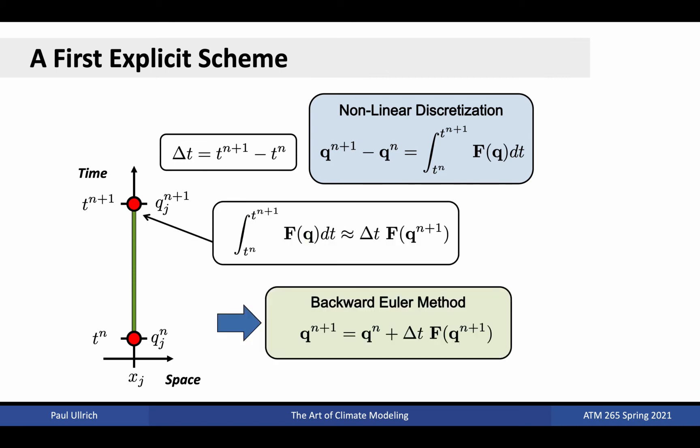But what if we use the final state instead of the initial state to approximate the integral term? In that case, the right-hand side then consists of both the known initial state and a term which is a function of the unknown final state. If we could solve this equation for qn plus 1, then we could also obtain a solution of the problem. The resulting method is known as the backward Euler method, our first implicit scheme.